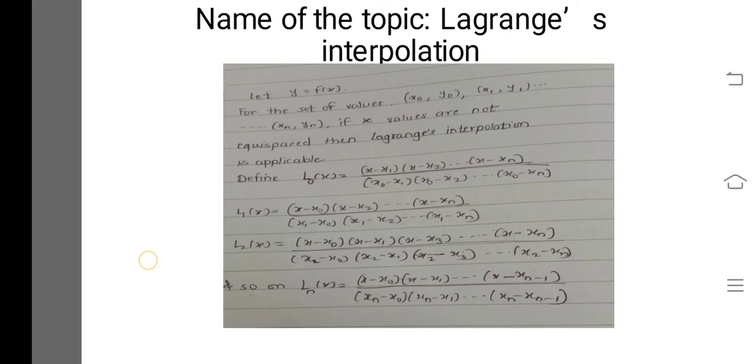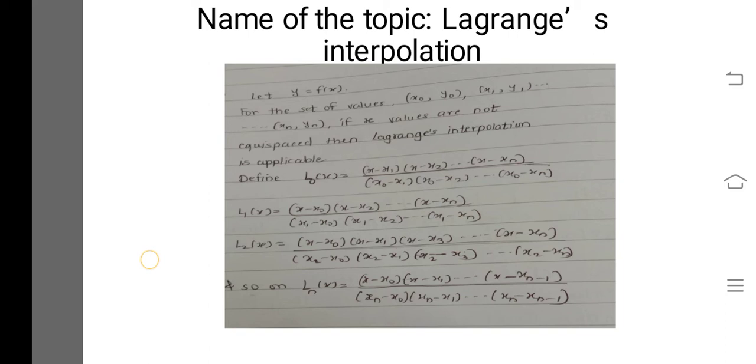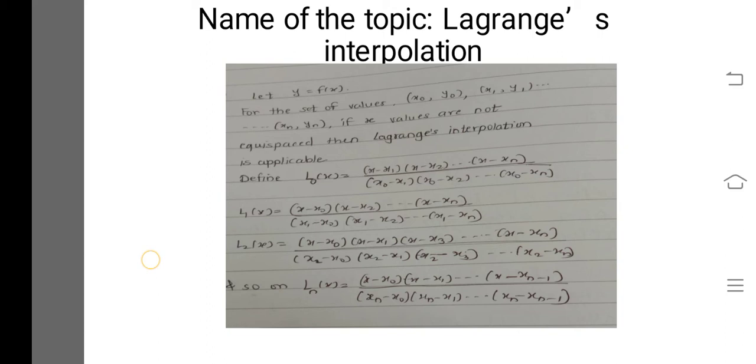For L1(x), we do not include the term (x − x1) in the numerator. So the numerator is (x − x0)(x − x2)(x − x3)···(x − xn), and the denominator is (x1 − x0)(x1 − x2)···(x1 − xn).